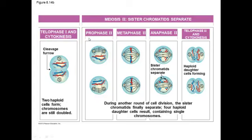Now essentially the steps you got familiar with in mitosis will happen again — prophase, metaphase, anaphase, telophase, and cytokinesis. But it's just a little different because the genes are a little bit different. The steps for meiosis 2 are much more similar to mitosis.